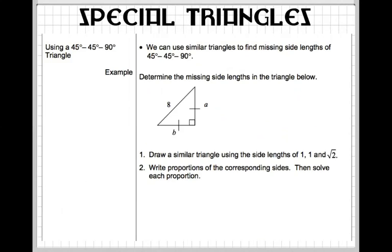So let's take the 45-45-90 and see how we can apply it to a problem. So this one right here says determine the missing side lengths of the triangle below. So as you can see, our first step right here tells us that we should draw our similar triangle. So here's our similar triangle. We know that this is 45 degrees right here. This is 1, 1, and this is radical 2.